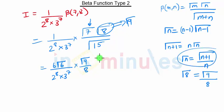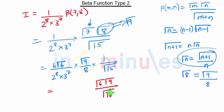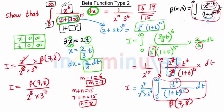Using this formula, into 1 upon gamma of 15, we get gamma of 6 and gamma of 9. So gamma of 6 into gamma of 9 upon gamma of 15 — this term is matching with the given equation.